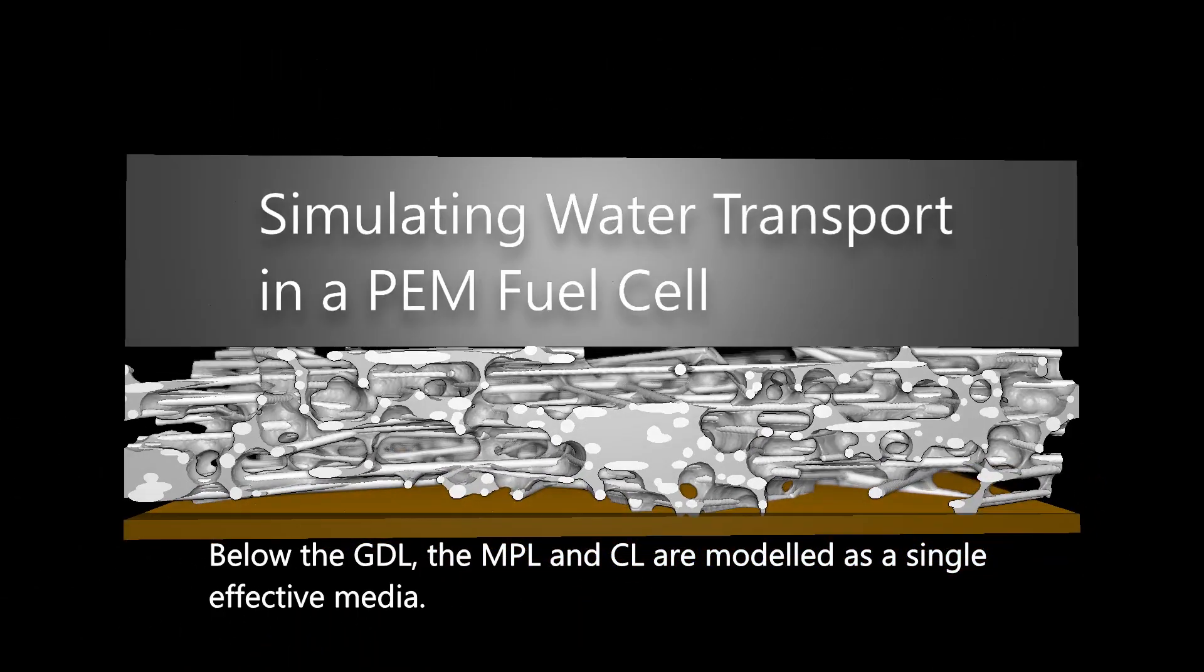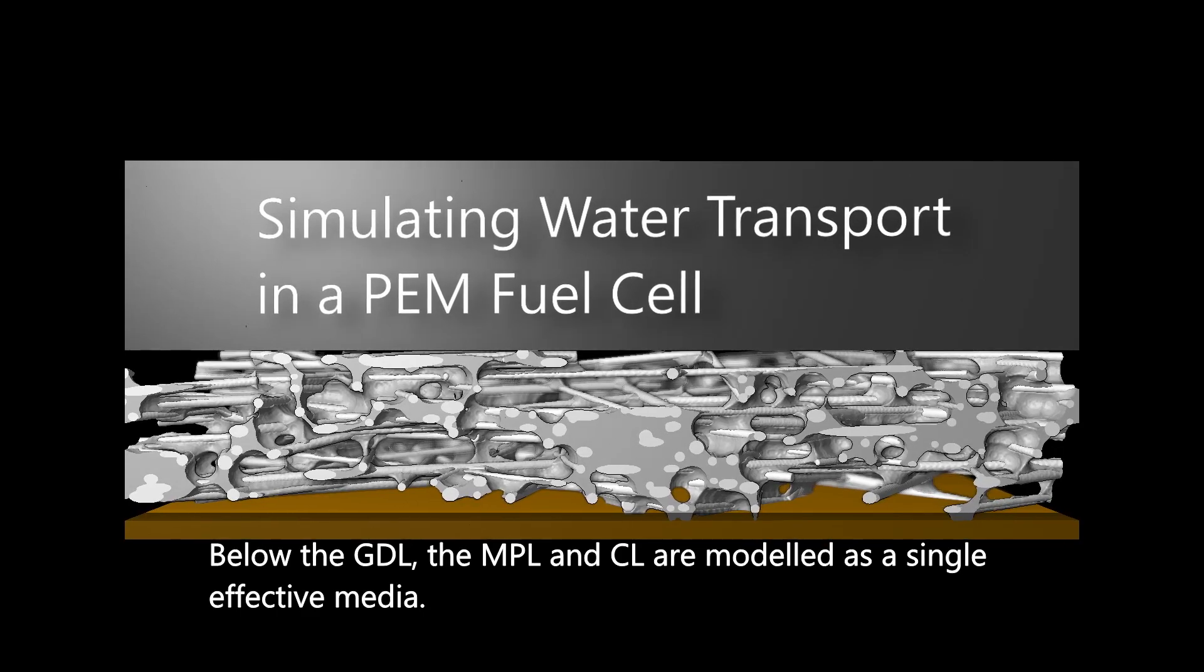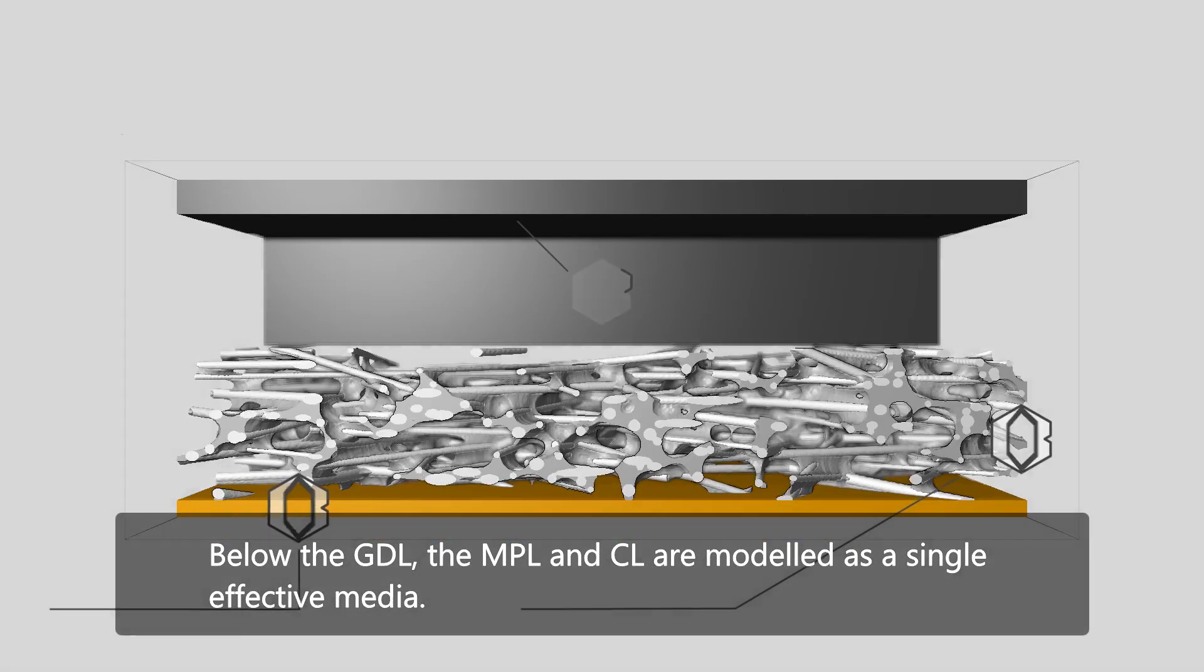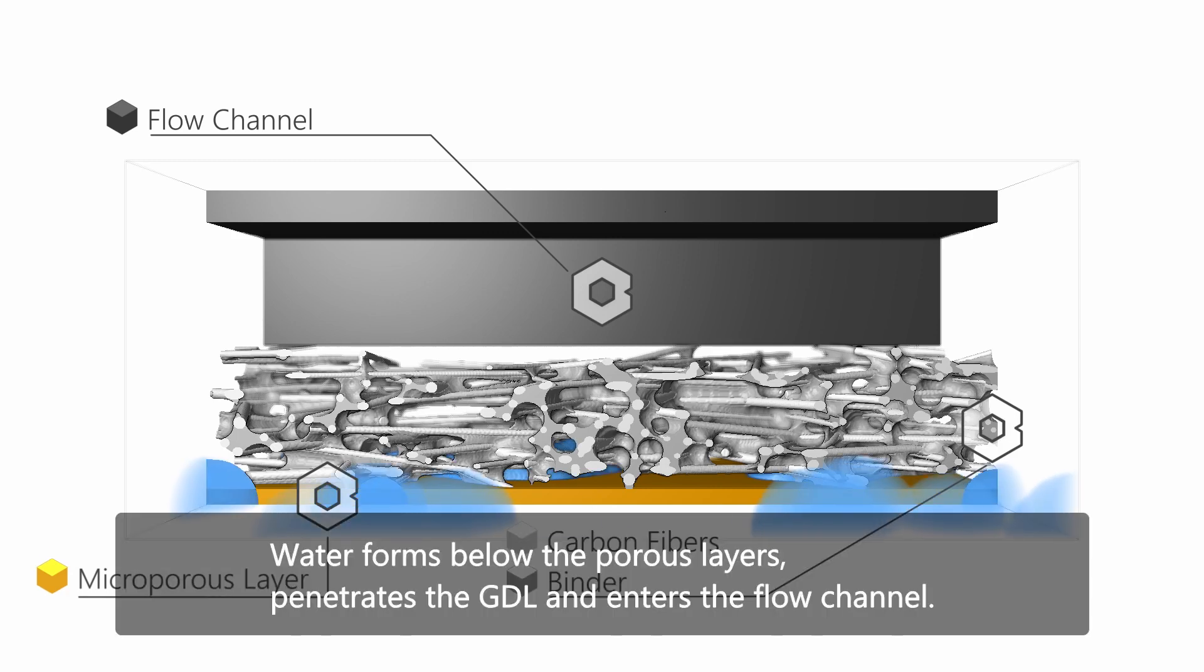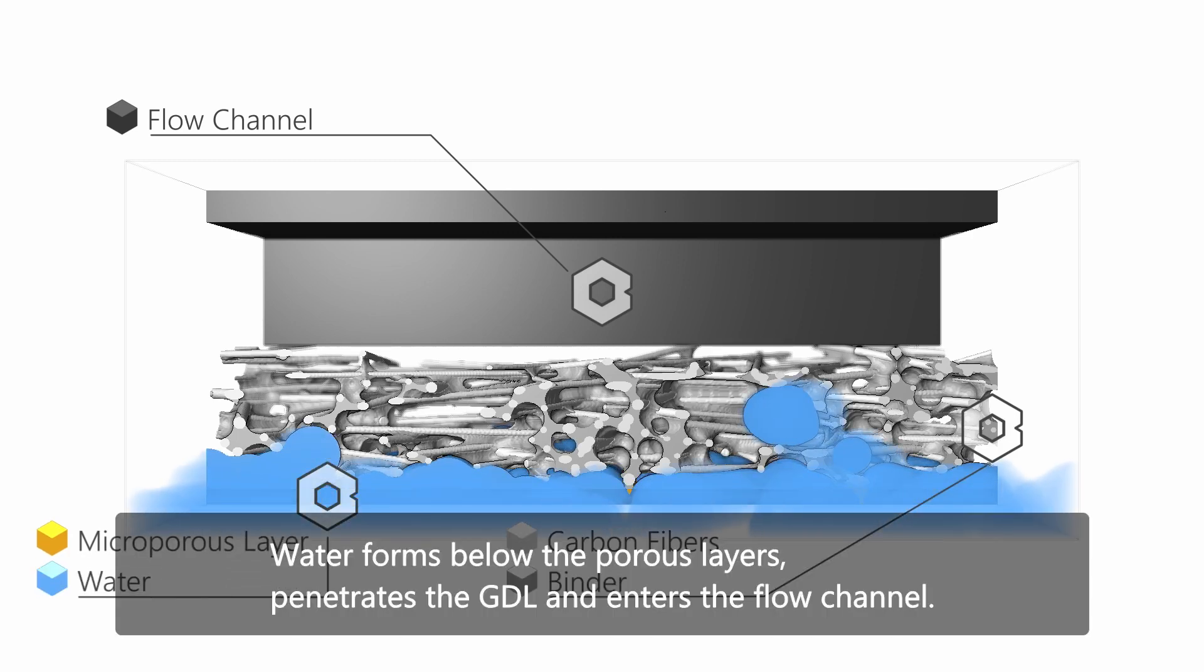Below the GDL, the microporous layer and catalyst layer are modeled as a single effective medium. Water forms below the porous layers, penetrates the GDL, and enters the flow channel.